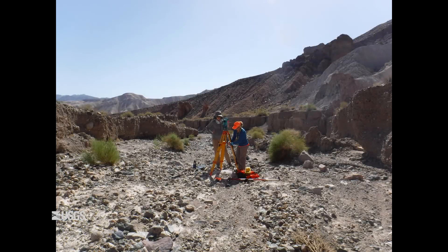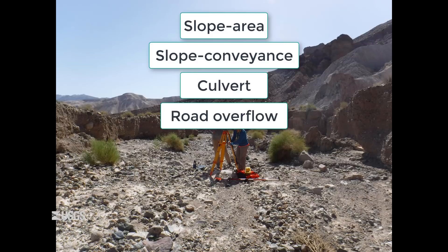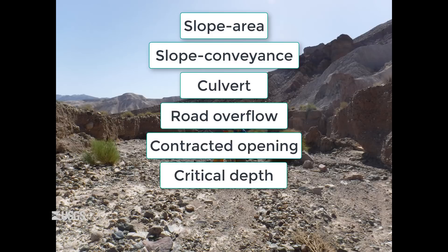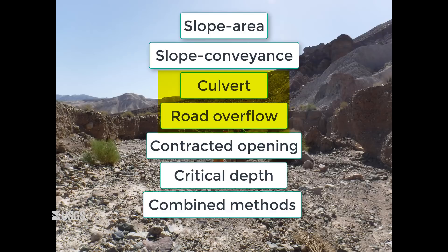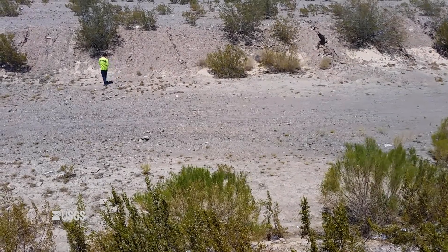Let's discuss the main types of indirect measurements presented in this video series. In no particular order, they are: slope area, slope conveyance, culvert computation, road overflow, contracted opening, critical depth, and combined methods, where you might employ two or more of the aforementioned methods to come up with a total discharge for the peak flow event. You will need to flag high water marks for all of these methods.